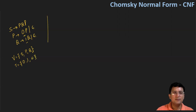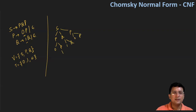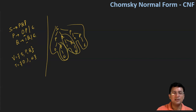Now, simplification of CFG rules — we need to remove useless symbols. As we know, Q can reduce to terminal and P can reduce to zero, so P also reduces to terminal. This means that S, P, and Q can all reach terminal symbols. So all symbols here are generating symbols and there are no useless symbols.